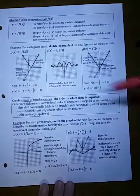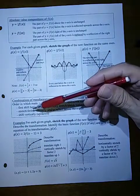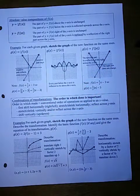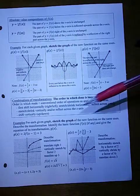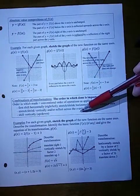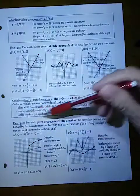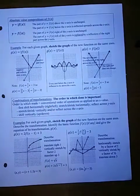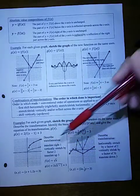For combinations of transformations, the order in which you do them is important. You should first go left or right horizontally, then stretch or shrink horizontally, then reflect across the y-axis — these all apply to the x value. Then stretch or shrink vertically, reflect across the x-axis, and finally shift vertically up or down. Shifting up or down should always be done last.